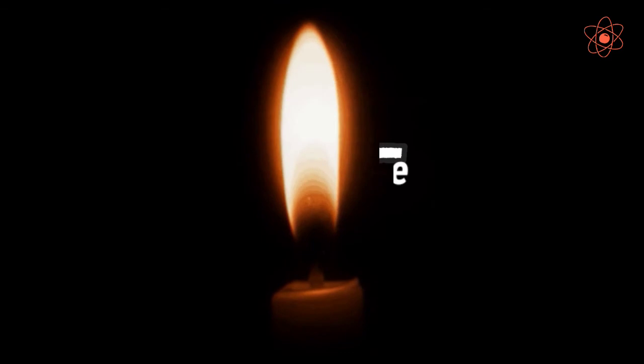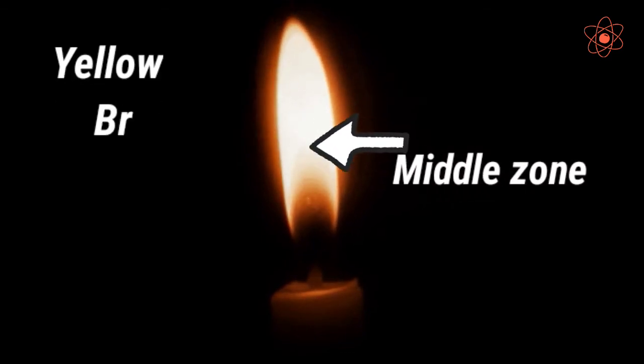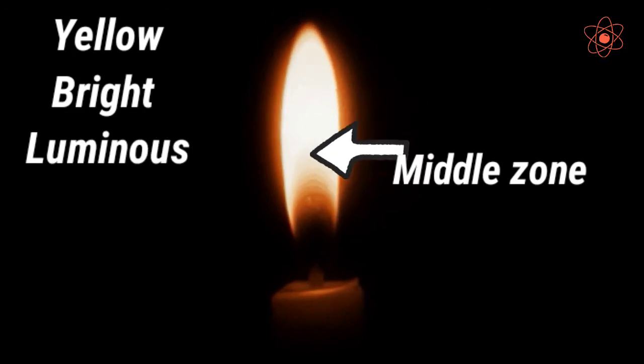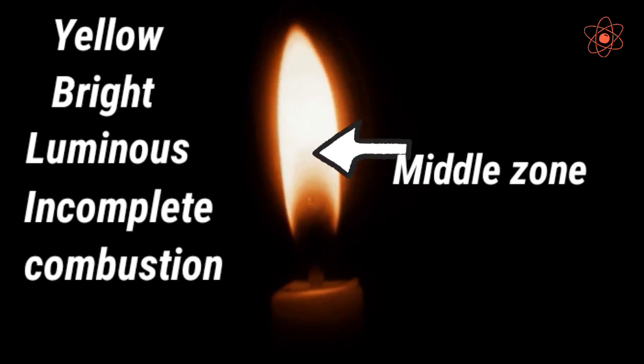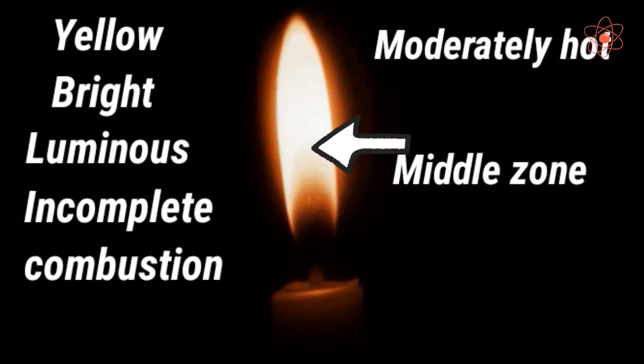Second, the middle zone. This part of the candle flame is yellow, bright, and luminous. It contains free hot carbon particles formed due to incomplete combustion of wax hydrocarbons. The zone is moderately hot. This is also called the yellow zone.